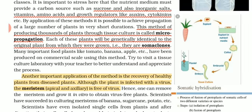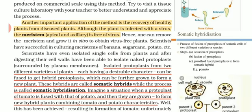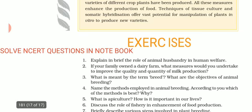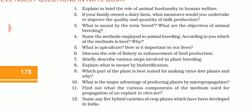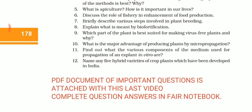Today we have studied biofortification, then tissue culture, then meristem culture, and last somatic hybridization. After this, you have an assignment to complete the NCERT questions in the notebook — 12 questions in total, many already discussed in the first and second video lectures. A PDF document of important questions is attached with this last video. Complete all question answers in the fair notebook. There are one mark, two mark, and three mark questions with answers attached. Complete your notebooks and we will meet with the next chapter. Thank you.